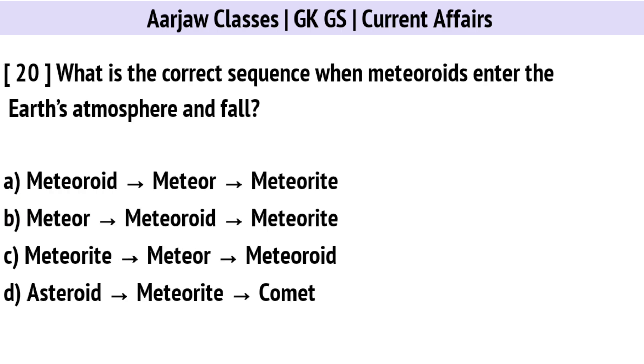What is the correct sequence when meteoroids enter the Earth's atmosphere and fall? Correct option is A: Meteoroid → Meteor → Meteorite.